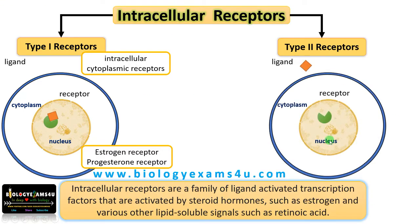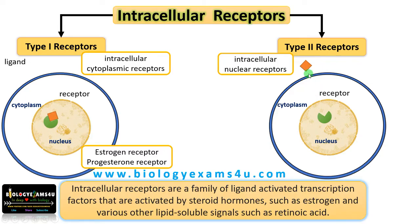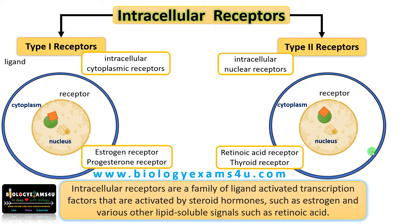In the case of type 2 receptors, the receptor is located inside the nucleus in the presence or absence of ligand — so these are intracellular nuclear receptors. The ligand crosses the plasma membrane, moves through the nuclear pore, and binds to the receptor inside the nucleus, then binds to DNA and activates gene expression. Examples include retinoic acid receptor and thyroid receptor.